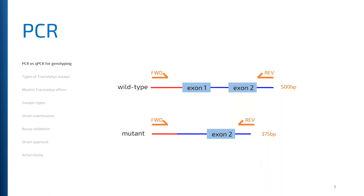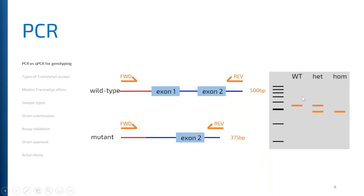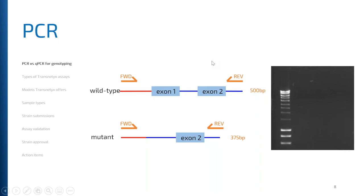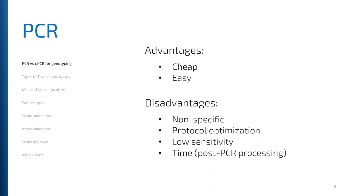You'd run this PCR product out on a gel and get a higher band size for wild type animals, both bands for the het, and the lower band size only for your homozygous mutant. In reality though, you often end up with a bunch of nonspecific bands, making results interpretation really difficult or even impossible. Or worse, you end up with no bands at all and have to start over. Since you're relying only on band size, you may amplify a region of DNA you weren't targeting, which can confound your results interpretation.